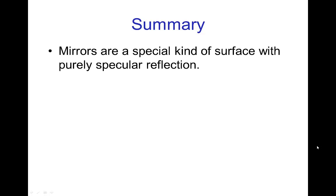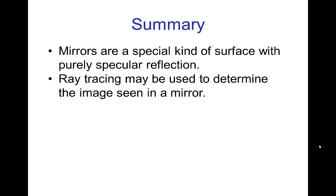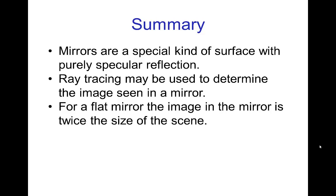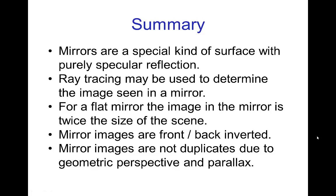So in summary, mirrors are a special kind of surface with purely specular reflection. Ray tracing can be used to determine the image seen in a mirror. And using ray tracing, we saw that a flat mirror has an image in the mirror that is twice the size of the scene, or in other words you only need half the size of a mirror to have appear the same scene. Mirror images are front back inverted, we think of them as left right inverted, but it's actually front back inverted. Mirror images are not duplicates because we have to account for geometric perspective and parallax. Of course in computer graphics that is often done automatically, but when we are imagining a scene and formulating a scene, we have to keep in mind that we have these effects in mirror images.